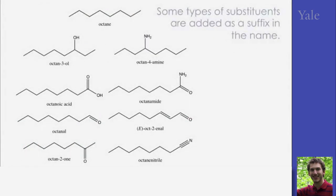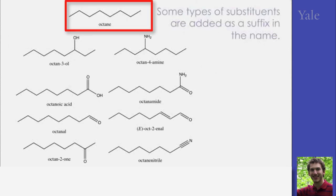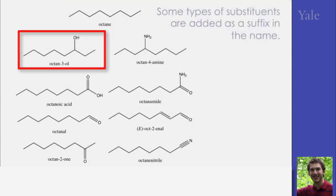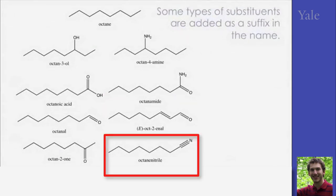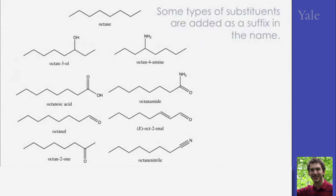Now, some of the substituents that can be added onto these chains are denoted by using a suffix in the name. For instance, going from octane to octanol, or octan-3-ol, if the hydroxy group is in the third position. Octanoic acid, octanol, these substituents typically are important to the function of the molecule and are therefore more important.